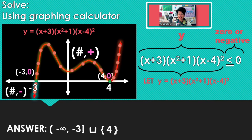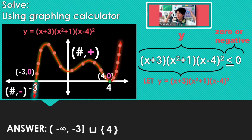If it's less than or equal to, it's the sections where you are on or below the x-axis. And if it's greater than or equal to, it's the sections where you are on or above. Alright, good luck, and I hope you're having a great day. See you later!